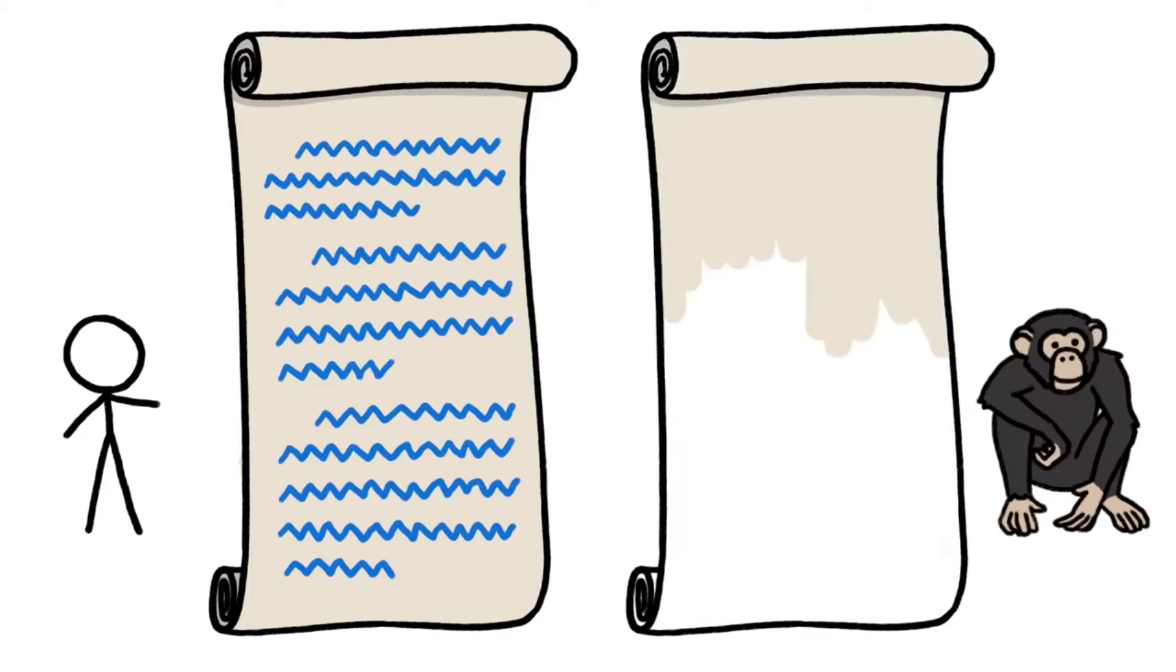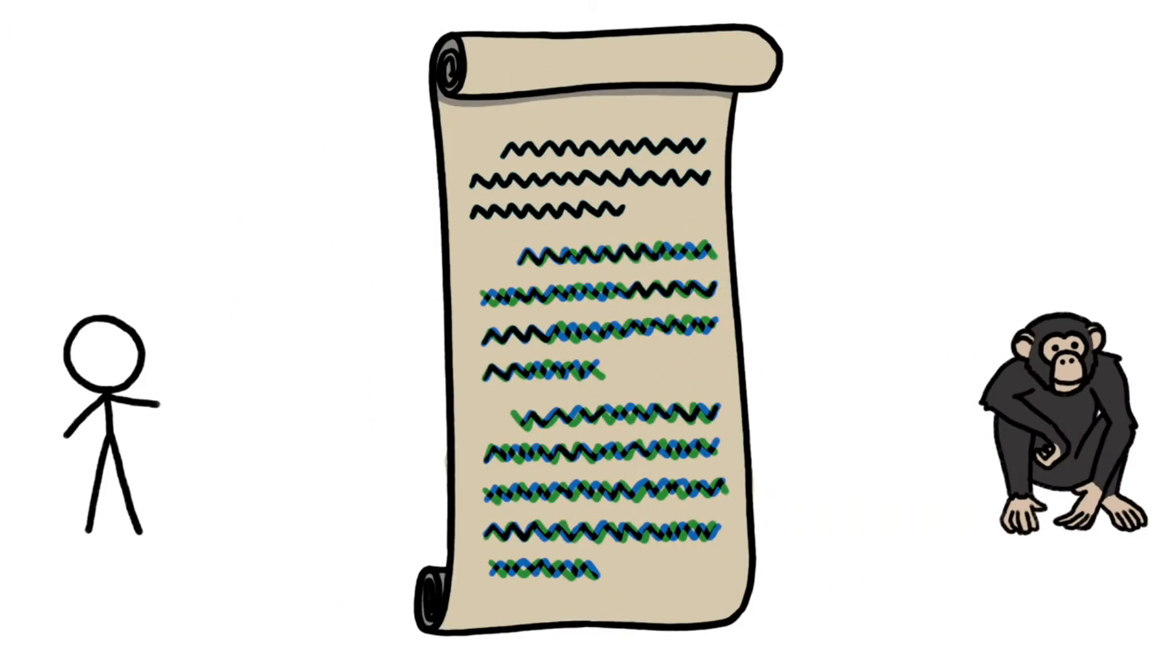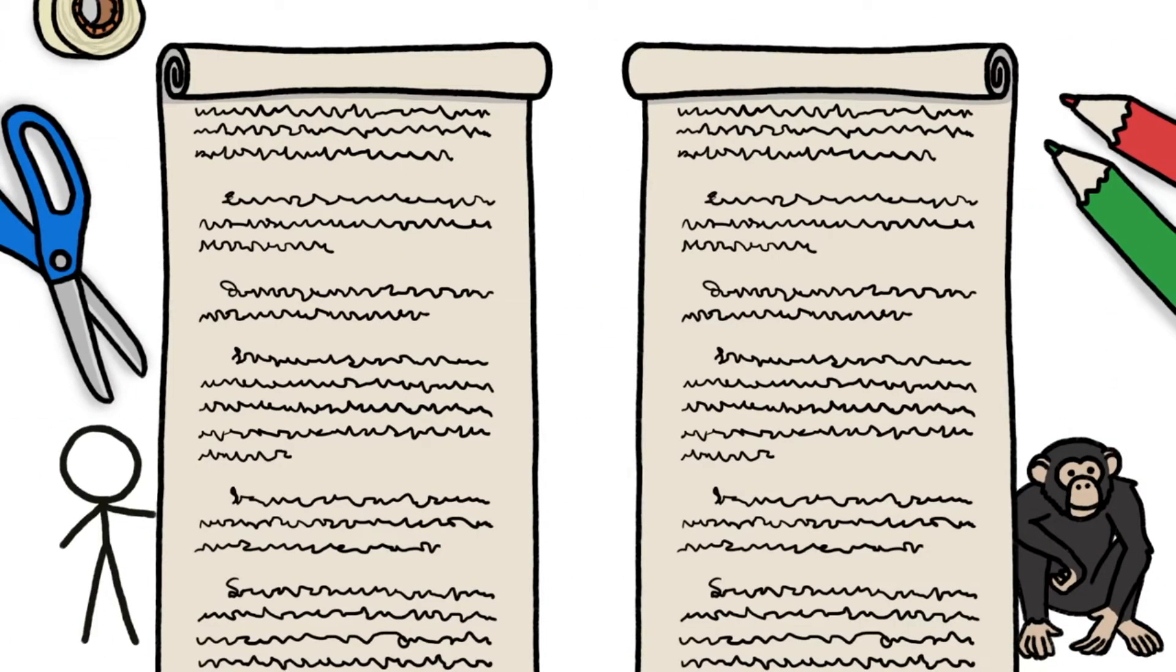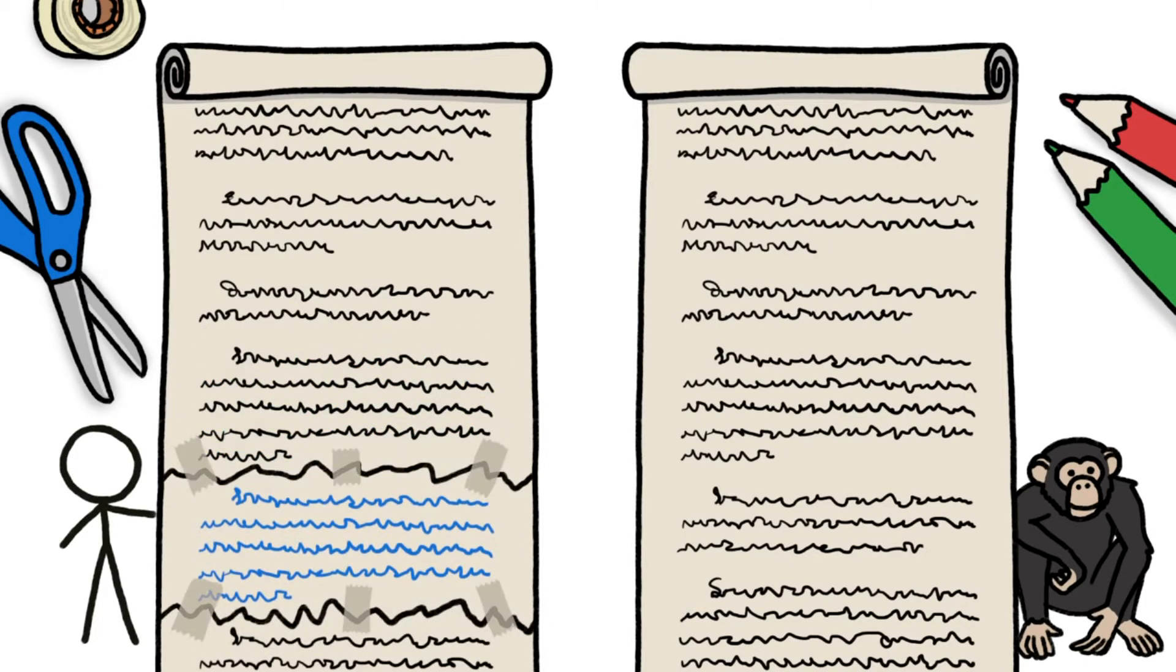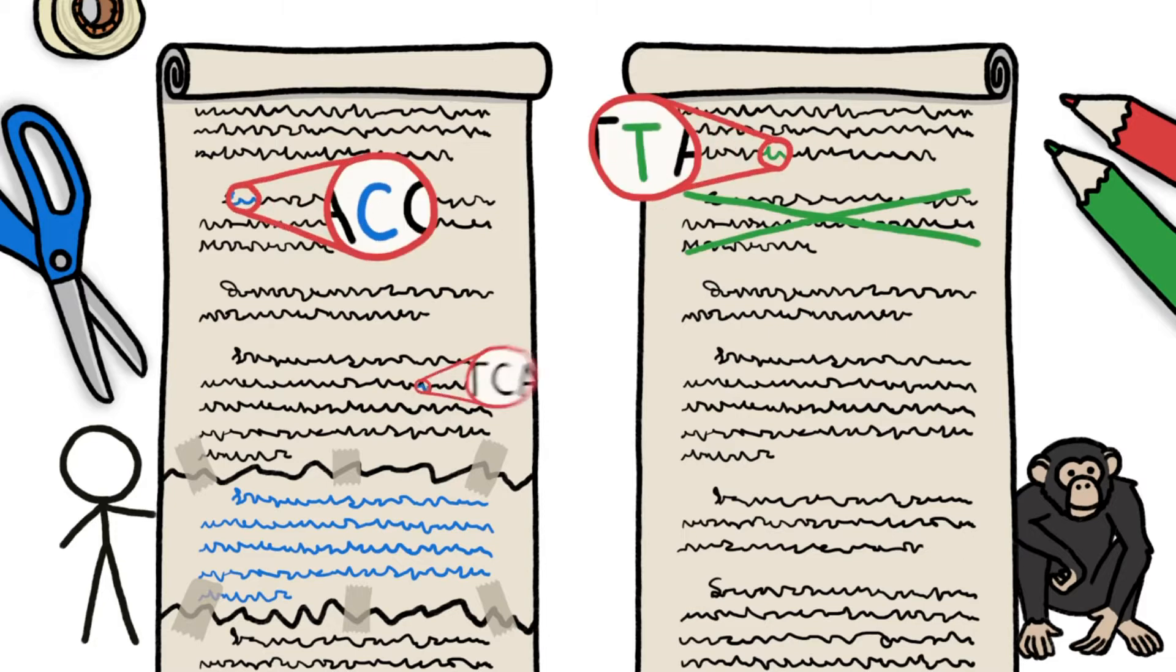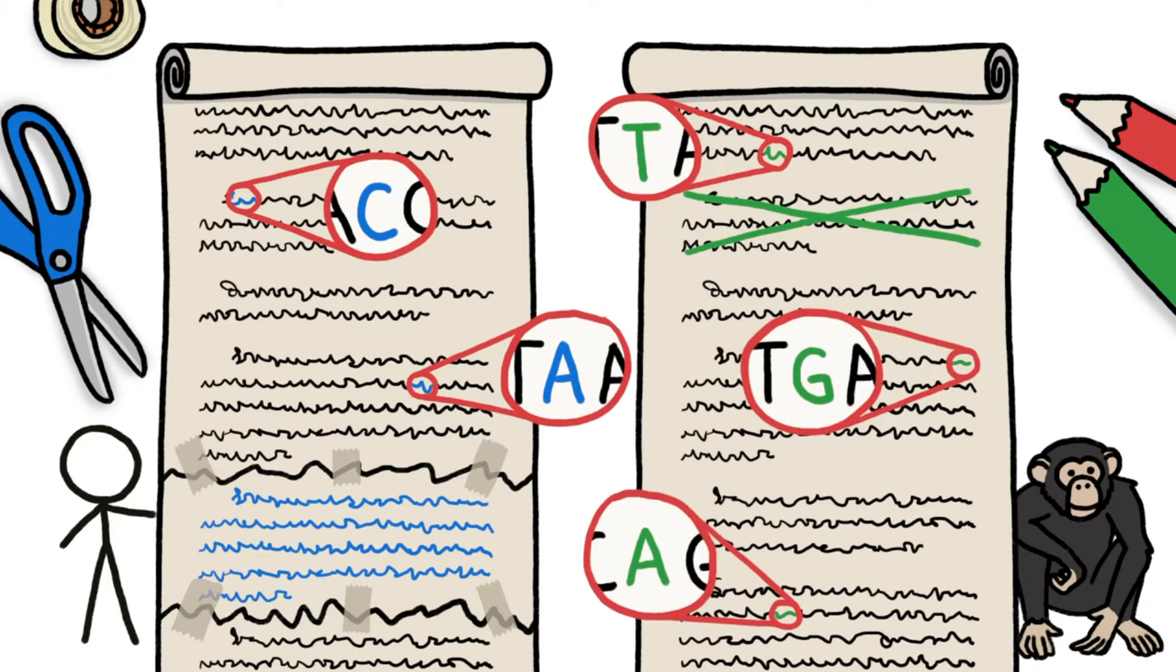But in reality, the human and chimp scrolls don't sync up so easily. Other large mutations revised huge sections of text, duplicating a chunk of human DNA here, erasing a chunk of chimp DNA there, while throughout the scrolls, tiny mutations swapped one letter for another.